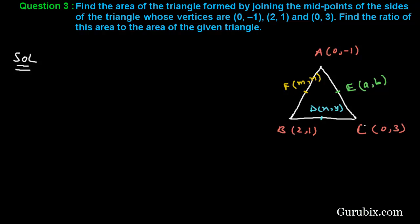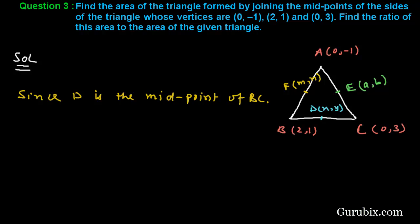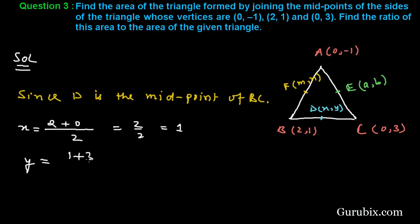Let us start with side BC. Since D is the midpoint of BC, the value of X will be (2 + 0) / 2 = 2/2 = 1. Y is equal to (1 + 3) / 2 = 4/2 = 2. Therefore, the coordinates of point D are (1, 2).